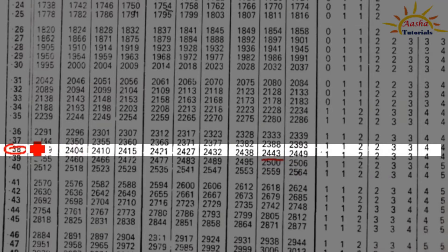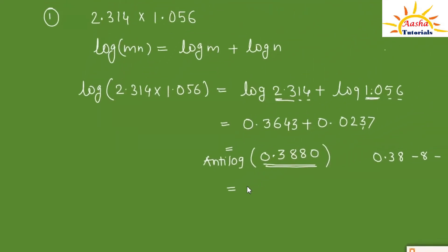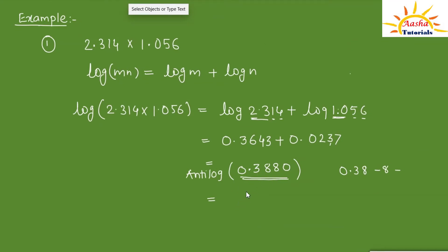The antilog of 0.38 in the 8th column is 2443. To place the decimal point, add 1 to the characteristic value: 0 plus 1 is 1. Since this is positive 1, write the decimal point after 1 digit to the right. So our final answer for the product of 2.314 × 1.056 is 2.443.